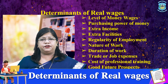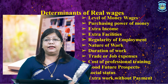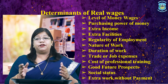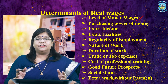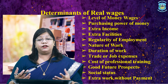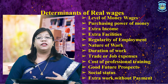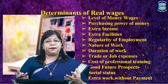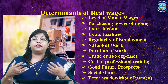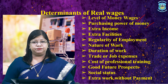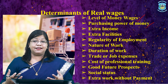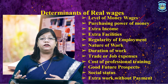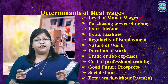Let us talk about the determinants of real wages. The first determinant is the level of money wages. If there is an increase in nominal wage, then real wage would also increase. Therefore, there is a direct relationship between nominal wages and real wages. The purchasing power of money and the price level are inversely proportional to each other. This implies that if the price level is high, then the purchasing power will be low and, as a result, the real wages would also be very low.